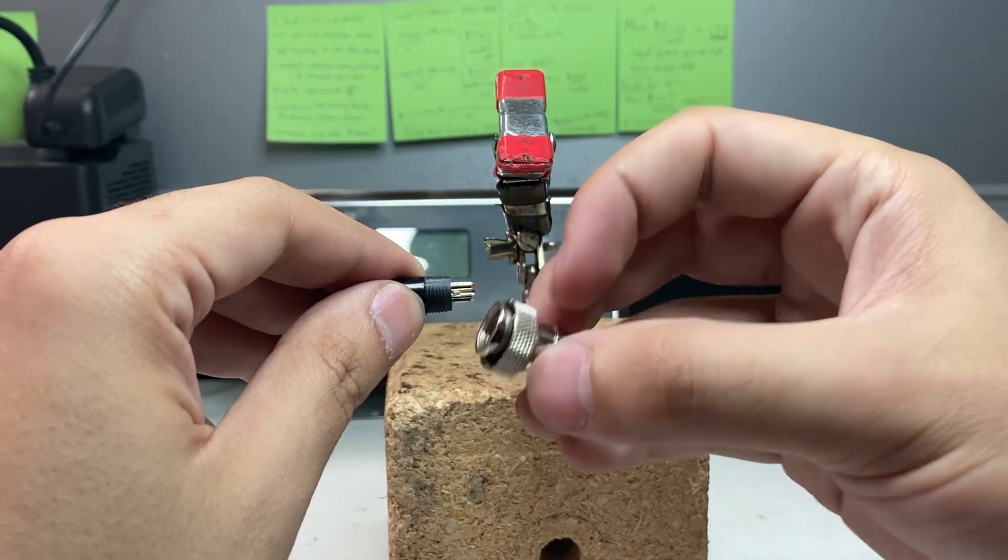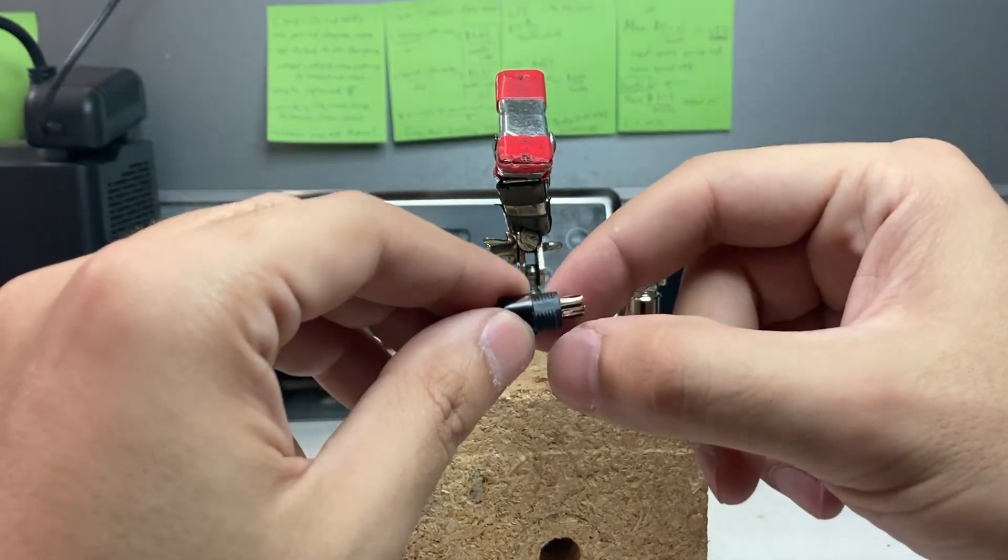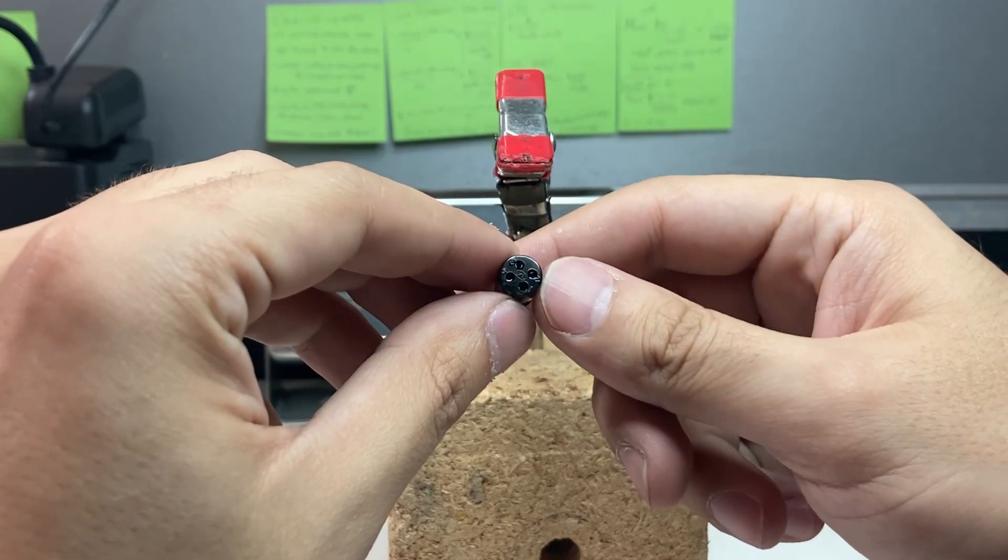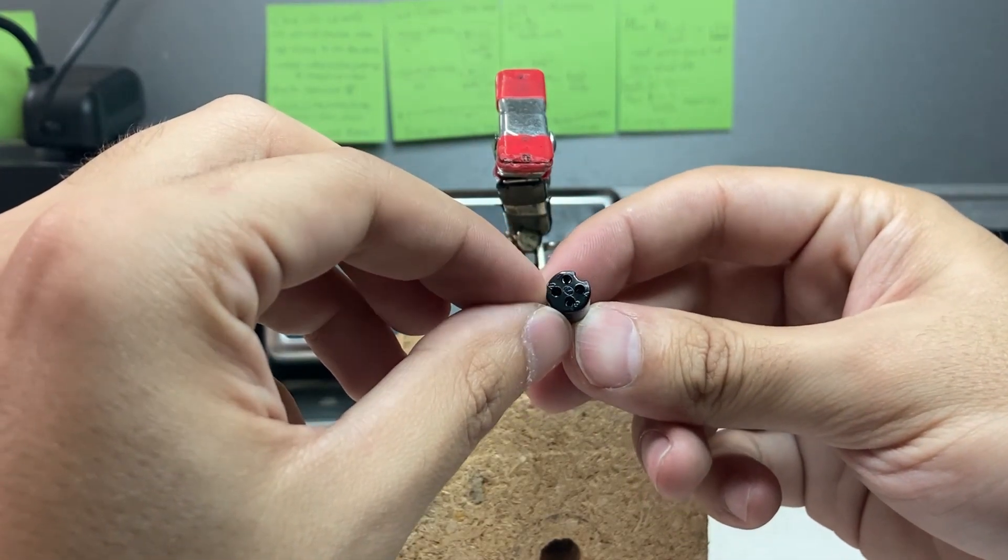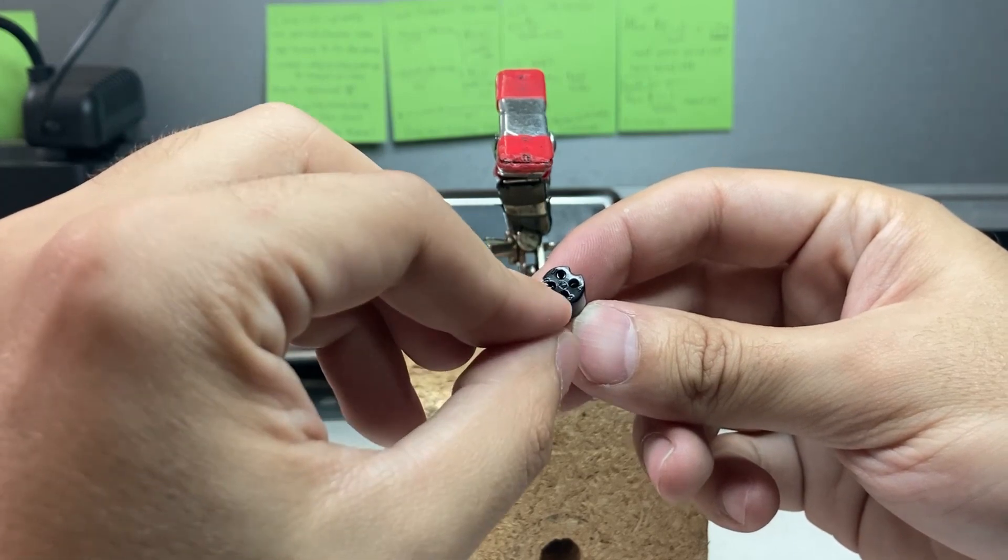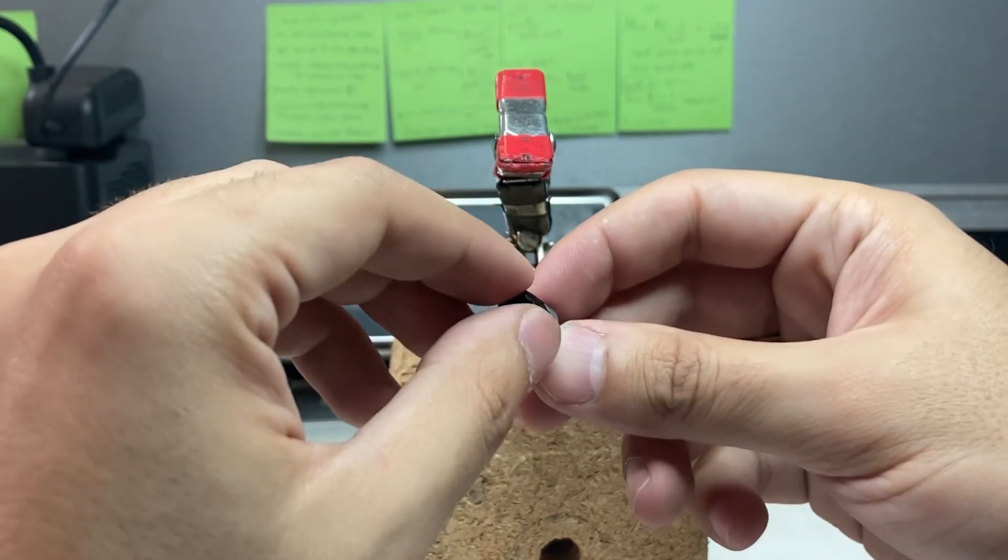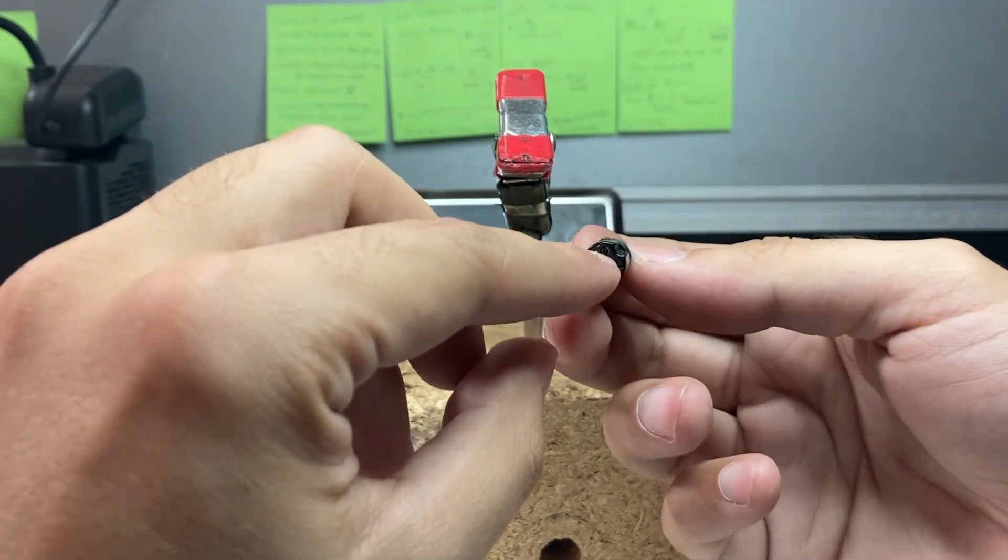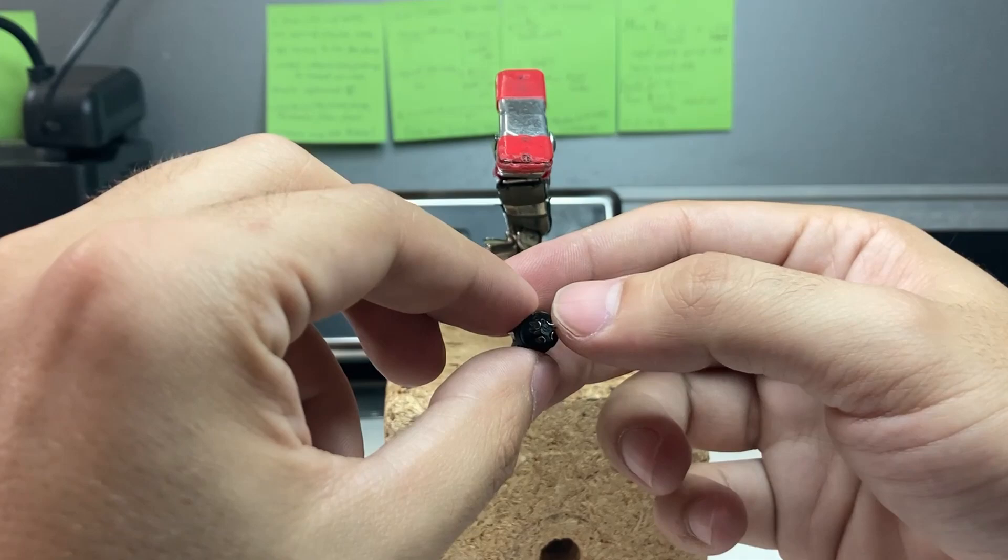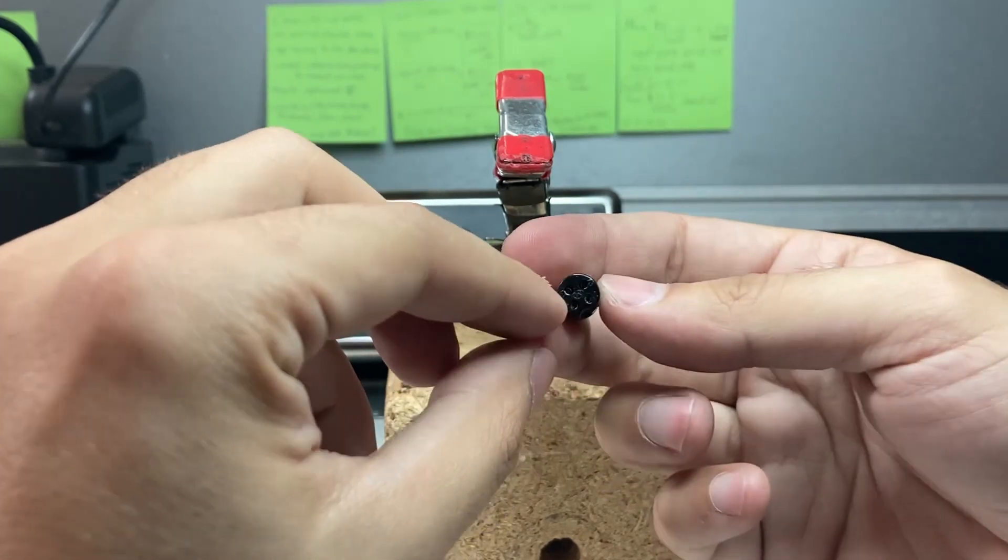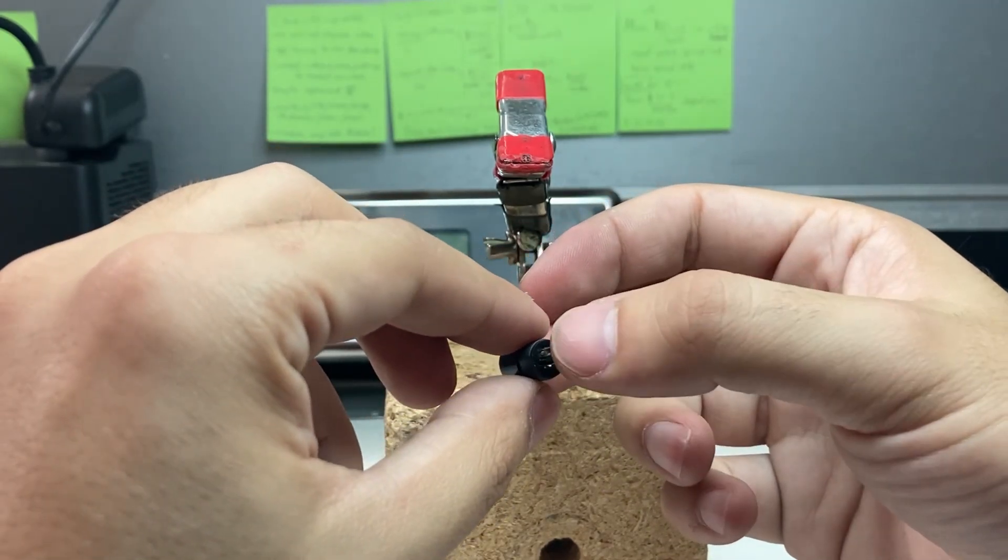Put the metal housing down and you'll notice there are numbers on the pins. Pin 1 is red, pin 2 is green, pin 3 is white, pin 4 is black. They correspond to the cables - pin 1 will be red soldered on here, then pin 2 from here will be the green cable, and white and black.